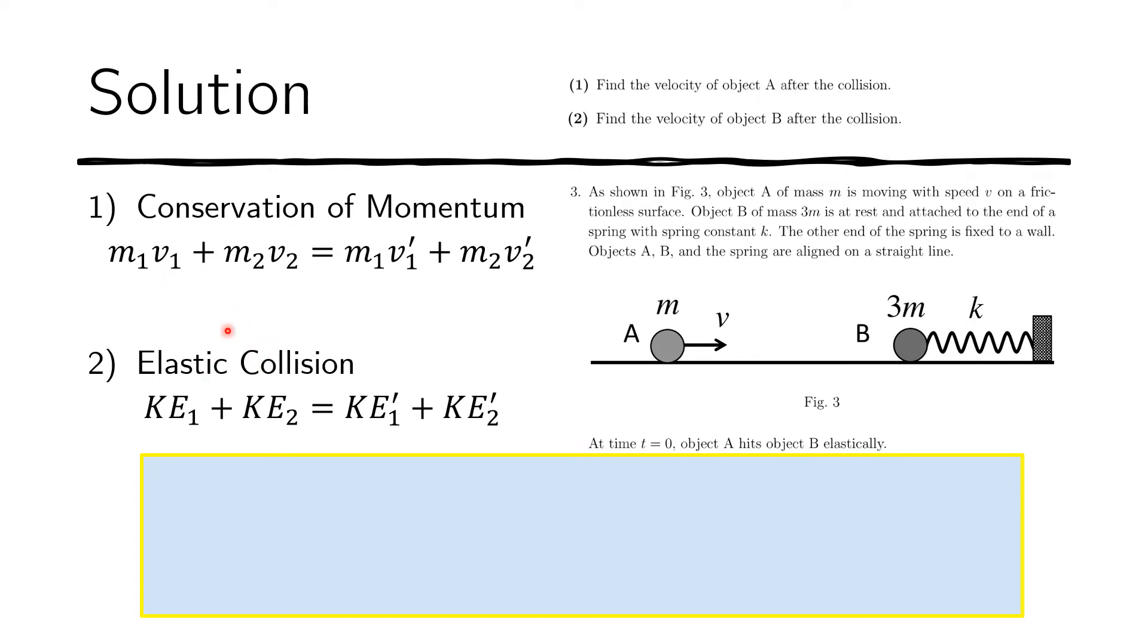Now that we have these relationships pinned down, we just need to substitute the values. For object A, the mass is m. For object B, the mass is 3m. Before the collision, the speed of object A is v, and the speed of object B is just zero because it's at rest. We're looking for their speeds v₁' and v₂' after the collision. Using conservation of momentum, we just replace the variables and get mv = mv₁' + 3mv₂'. We get v₁' in terms of v₂': v₁' = v - 3v₂'.